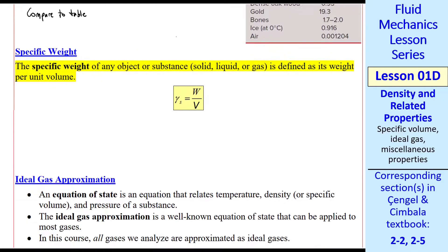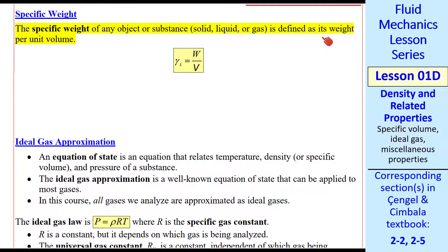Another property related to density is specific weight. It's defined as the weight of an object per unit volume. It's just like density except we have weight instead of mass in the numerator. The symbol in the Cengel and Cimbala book is gamma sub s. We take a volume of fluid with some weight and some volume, and we can calculate the specific weight.